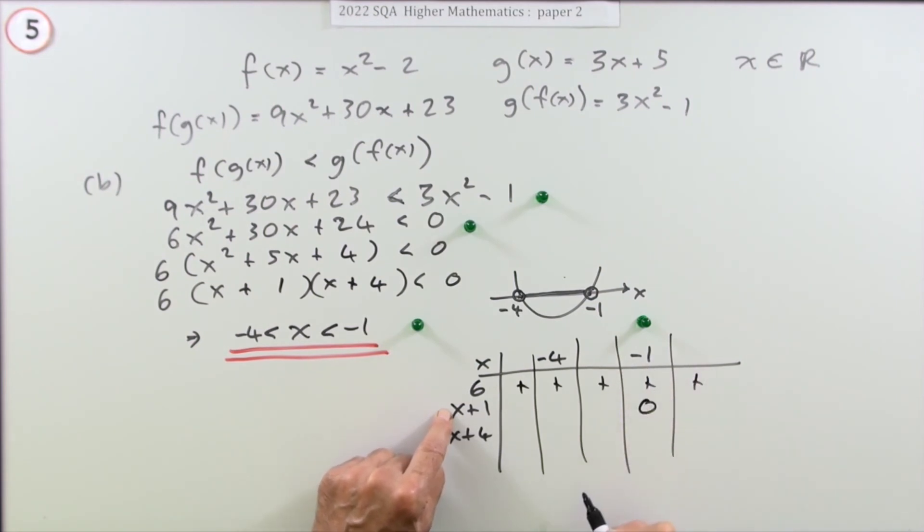For (x plus 1): when x equals negative 1, it's zero. Higher than that, it's positive; less than that, it's negative. For (x plus 4): zero at x equals negative 4, positive above, negative below.